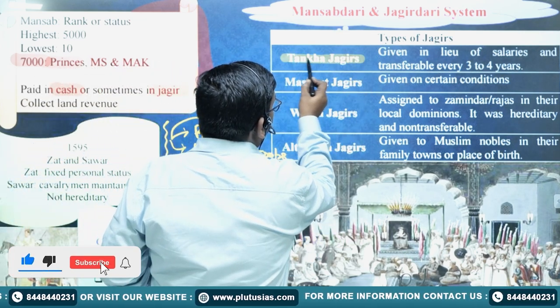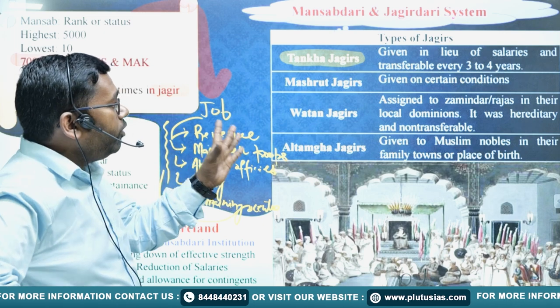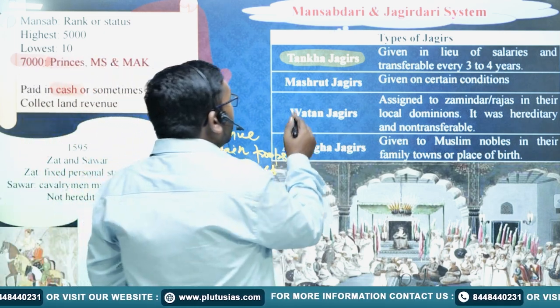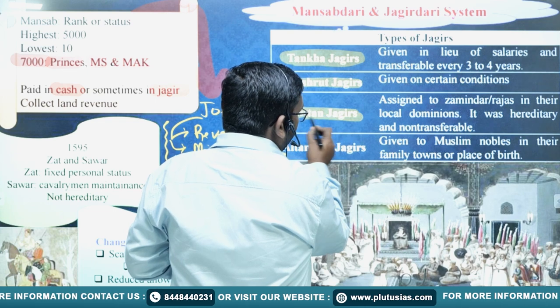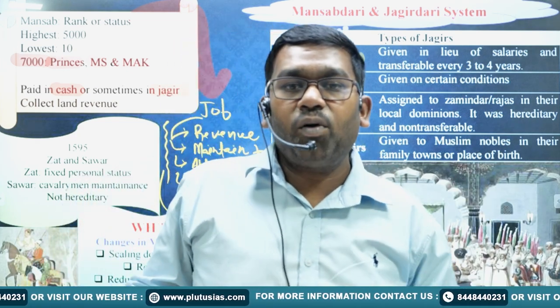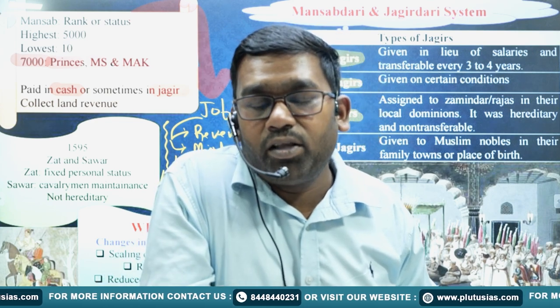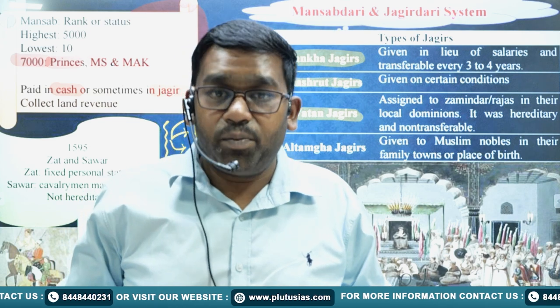The first type was Tankhwa Jagir, which was given to the person in lieu of salary and was transferable every three to four years. The second was Mashrut Jagir, paid on certain conditions. The third and very important one was Vatan Jagir — these Jagirs were given to defeated kings or zamindars. Suppose Akbar attacked a state, defeated it, and allowed the king to remain there, but required all revenues from that state to be paid to the Mughal Empire. These independent kings who became subordinate to the Mughal Empire were known as Vatan Jagirdars. They were more powerful than normal Jagirdars appointed through the Mansabdari system.